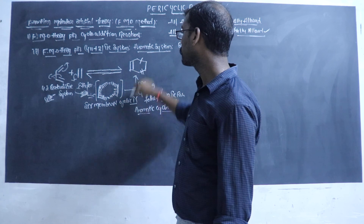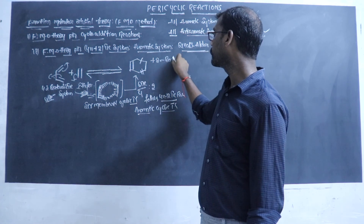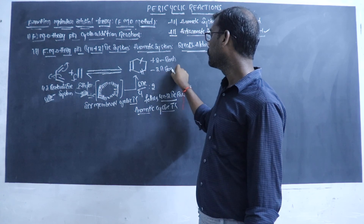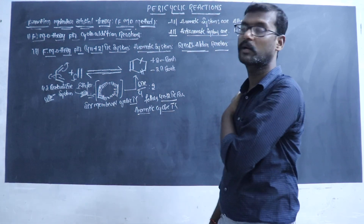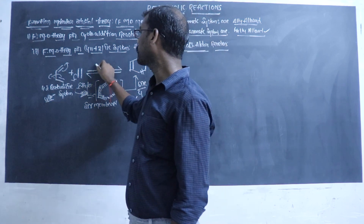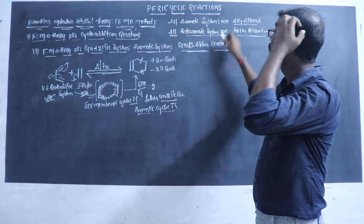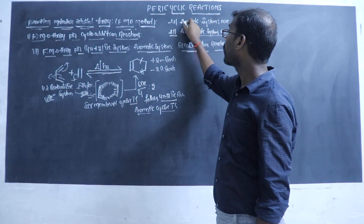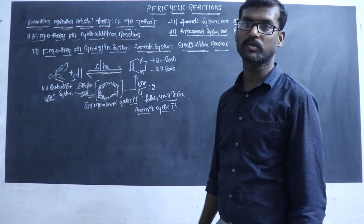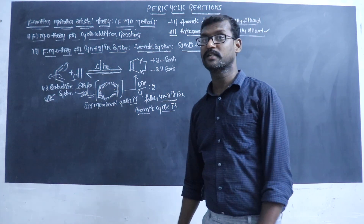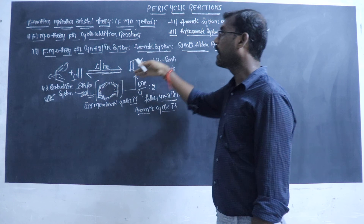Two new sigma bonds are formed, plus 2 sigma bonds and minus 2 pi bonds. We can see that the reaction proceeds under thermal conditions or photochemical conditions. Aromatic systems are thermally allowed. Anti-aromatic systems are photochemically allowed. Dimerization under photochemical conditions involves the anti-aromatic system.